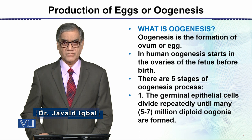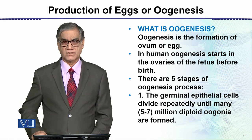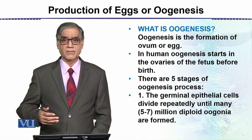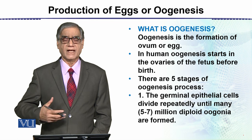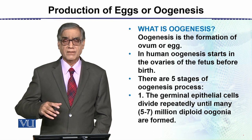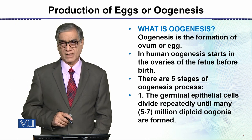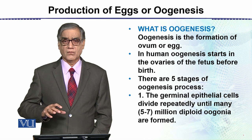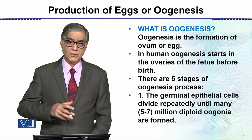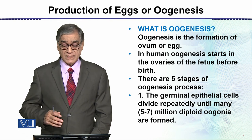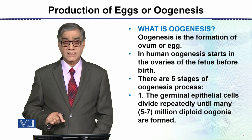Oogenesis starts in the ovaries of the female fetus, that is, before birth. When the female child is in fetal condition, egg production — oogenesis — starts there. By the time of birth, there are many cells destined to give rise to eggs, and ultimately at the time of puberty only approximately 500 eggs remain which then have to mature. So in human oogenesis starts in the ovaries of the fetus before birth, and there are five stages of the oogenesis process.